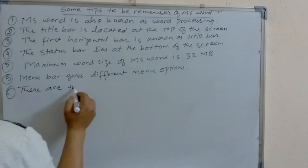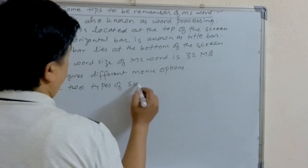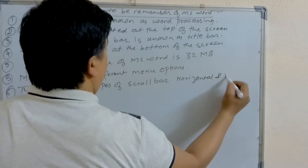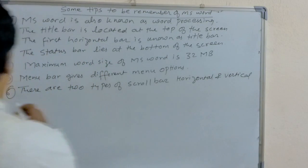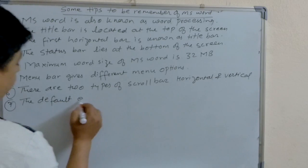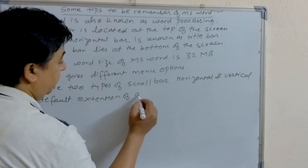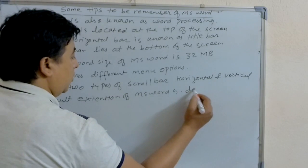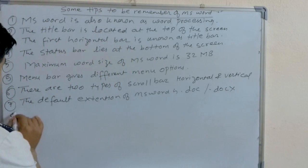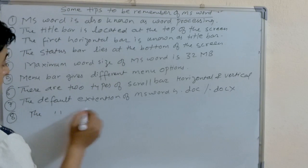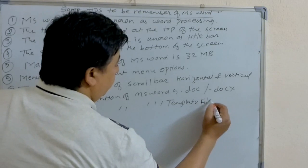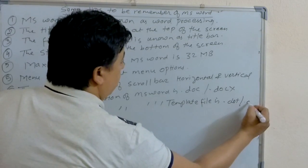There are two types of scroll bar. The default extension of MS Word is .doc in 2003 and .docx in 2007. The default extension of MS Word template file is .dot in 2003 and .dotx in 2007.